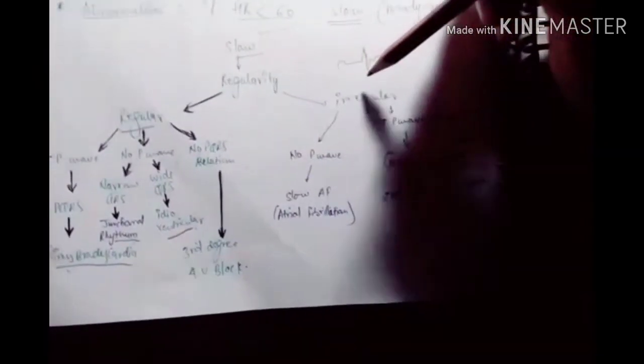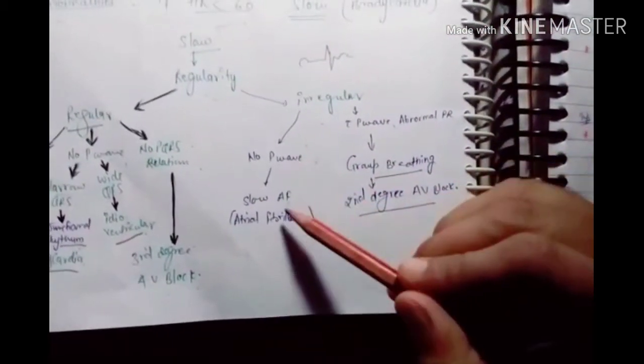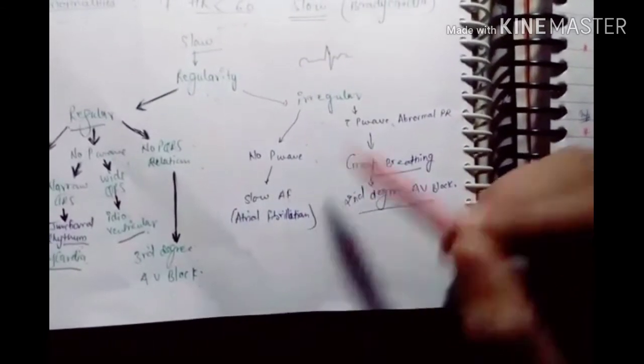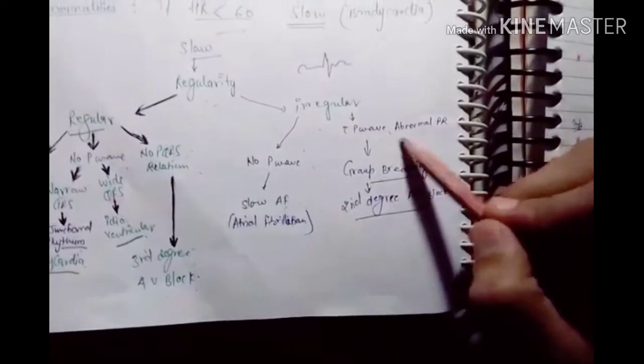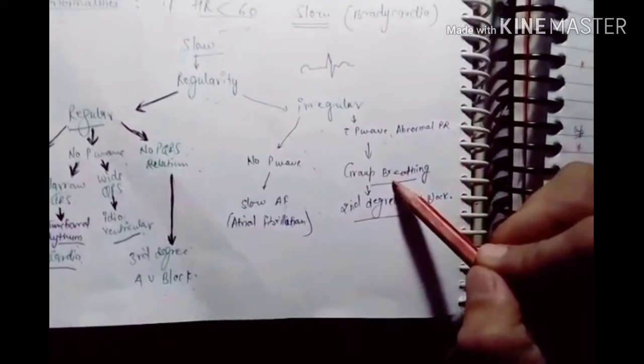If there is irregularity of bradycardia with no P wave, we consider slow atrial fibrillation. If there is a P wave with abnormalities of the PQR interval, we consider group breathing and second degree atrioventricular blockage.